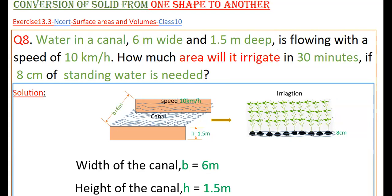So here, the width of this canal B is equal to 6 meters and height of the canal H is equal to 1.5 meters. Speed of this water is 10 kilometers per hour. We have to find how much area will it irrigate in 30 minutes if 8 centimeters of standing water is needed.